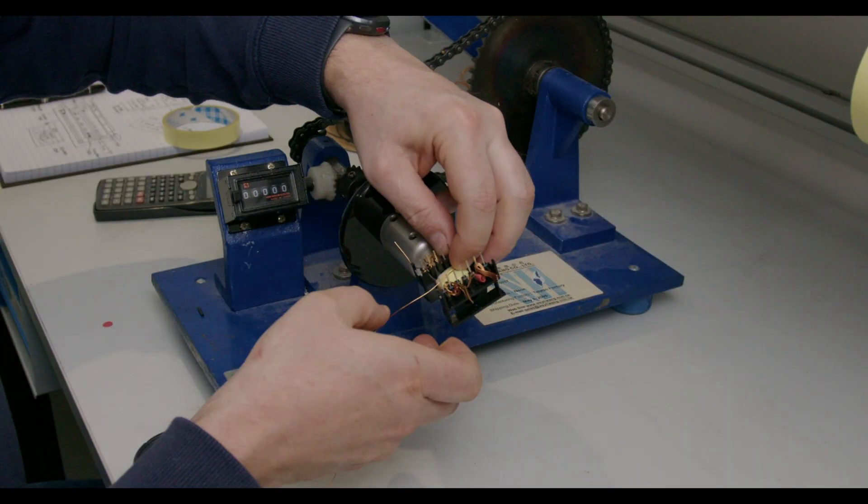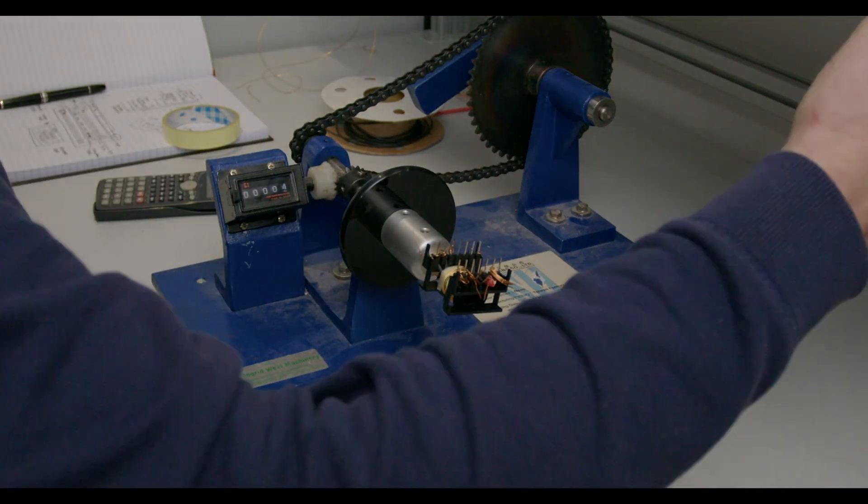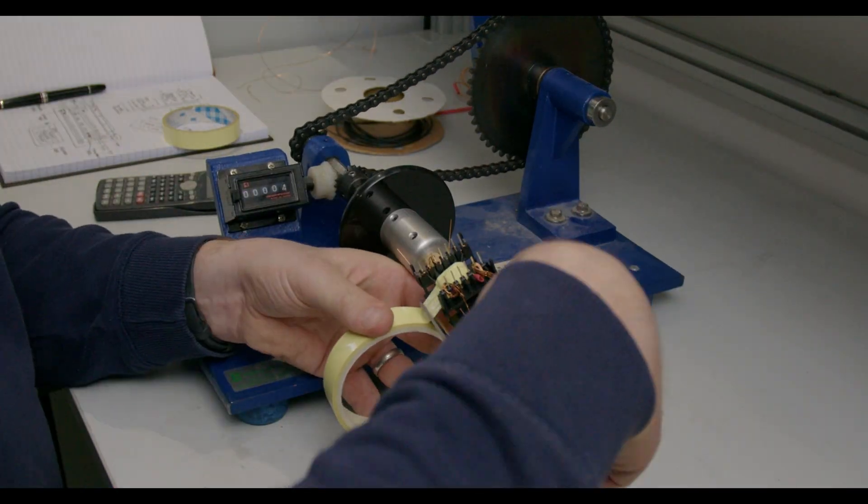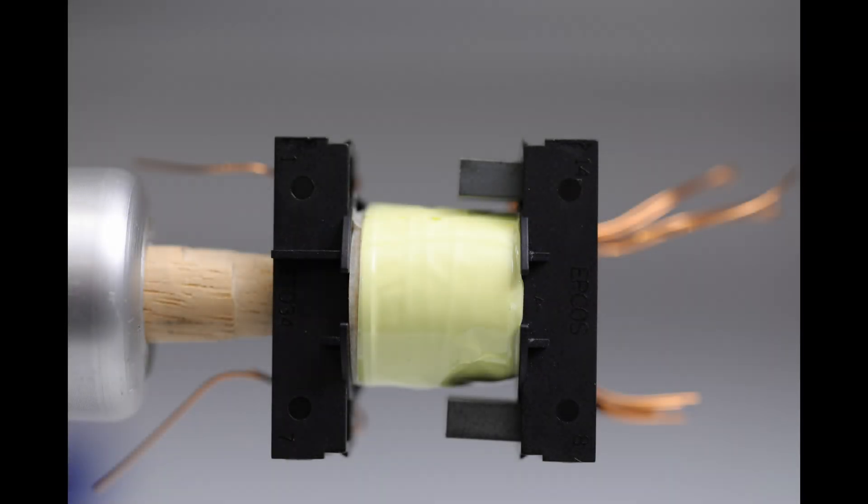Finally we wind the four bias windings of 0.5 millimeter wire, starting on pin six and finishing on pin seven. We try to spread these over the winding width to keep the coupling reasonable to the secondary. More insulation tape is applied and we check to see that the ferrite core can fit in place.